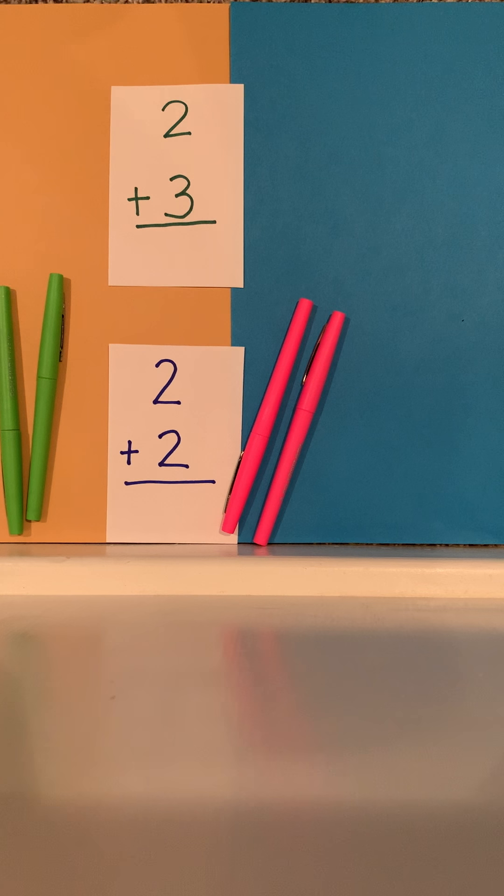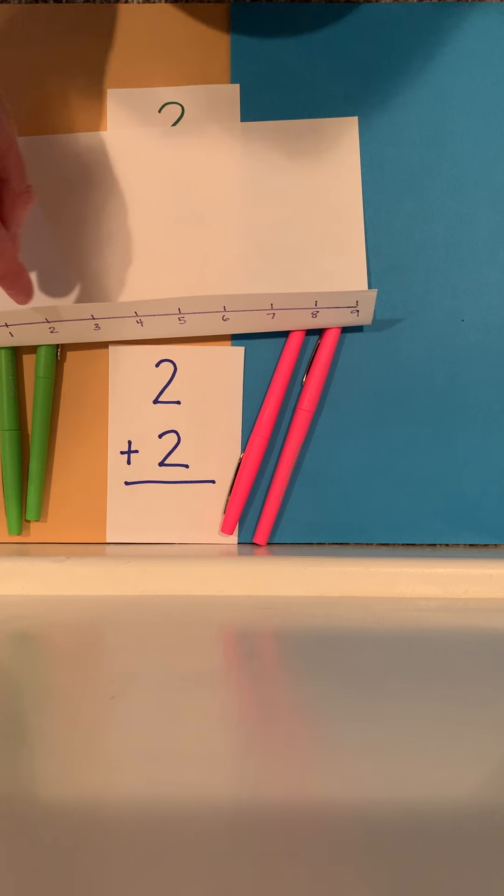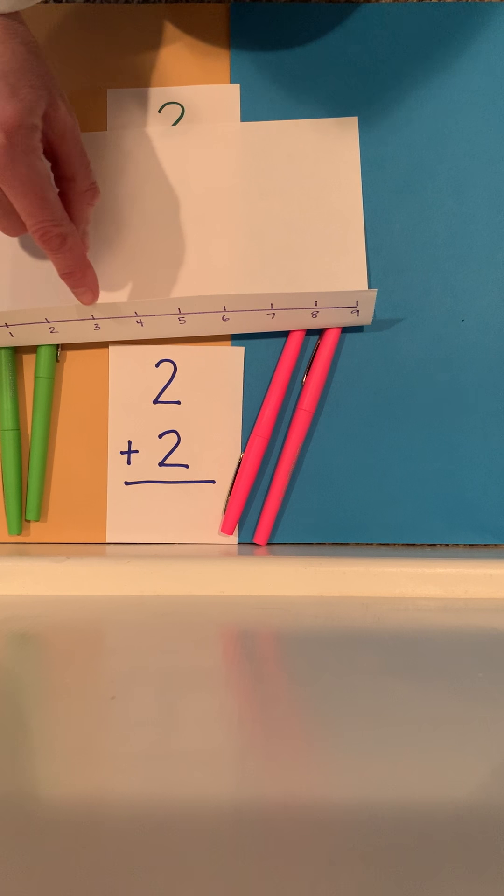When I take a look at the doubles plus 1, which one of these is the smaller number? Is it the 2 or the 3? Hopefully you answer 2. 2 and 3 sit together on the number line. Here's the 2. Here's the 3. All we're doing is adding 1 more.